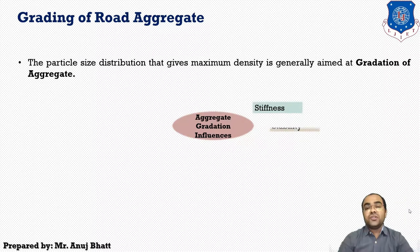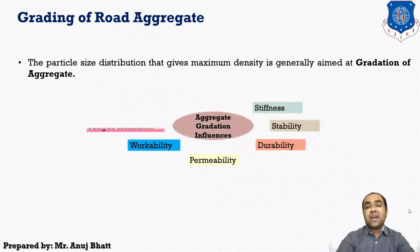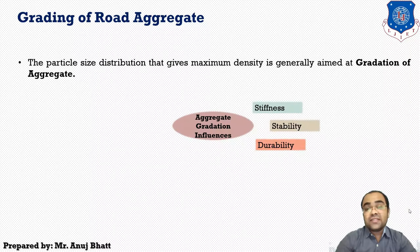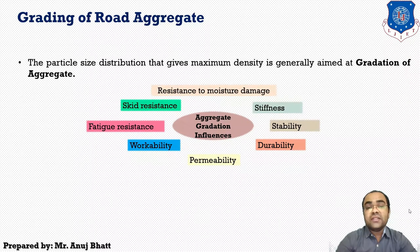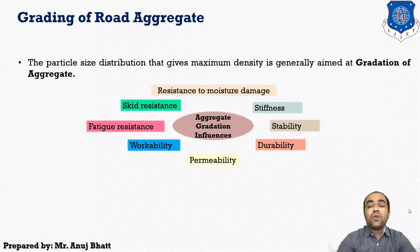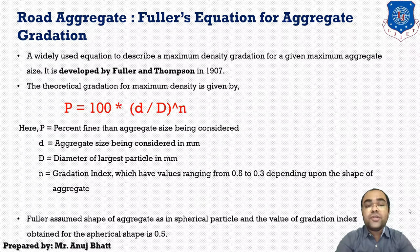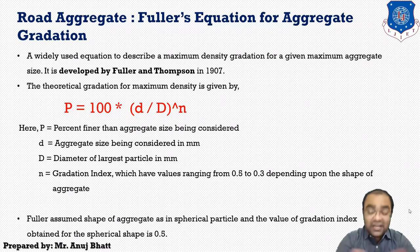Aggregate gradation influences almost every important property, including stiffness, stability, durability, permeability, workability, fatigue resistance, skid resistance, and resistance to moisture damage. A widely used equation to describe a maximum density gradation for a given maximum aggregate size was developed by Fuller and Thompson in 1907.